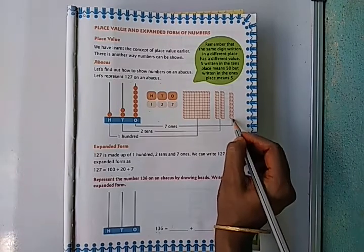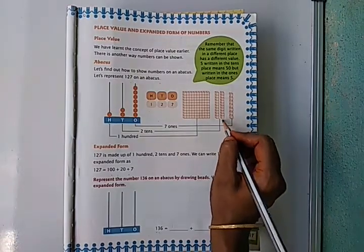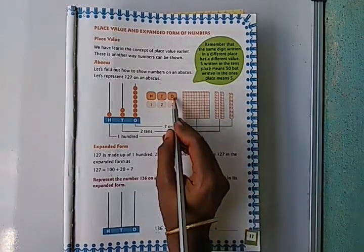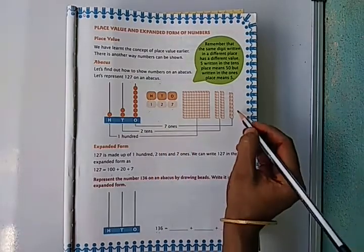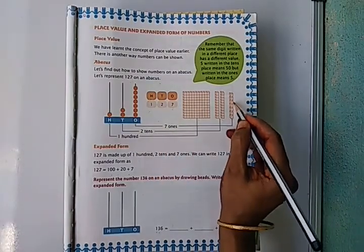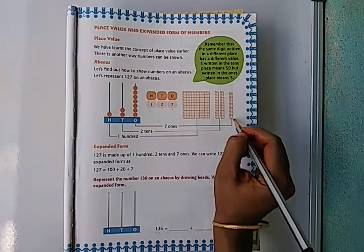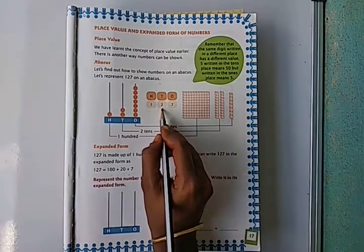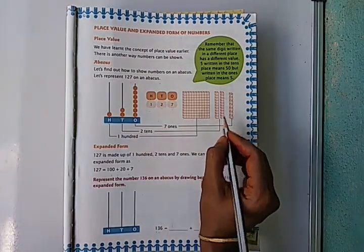These are single blocks, that means ones blocks, tens blocks, hundreds blocks. In ones place we have seven, so here one, two, three, four, five, six, seven blocks. Next, in tens place, two tens blocks.